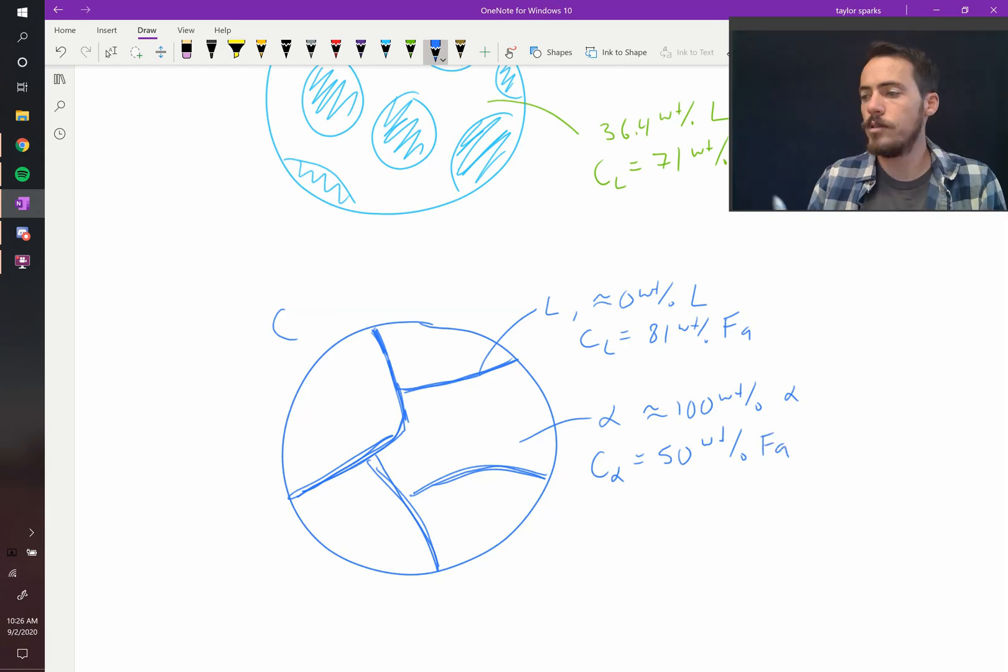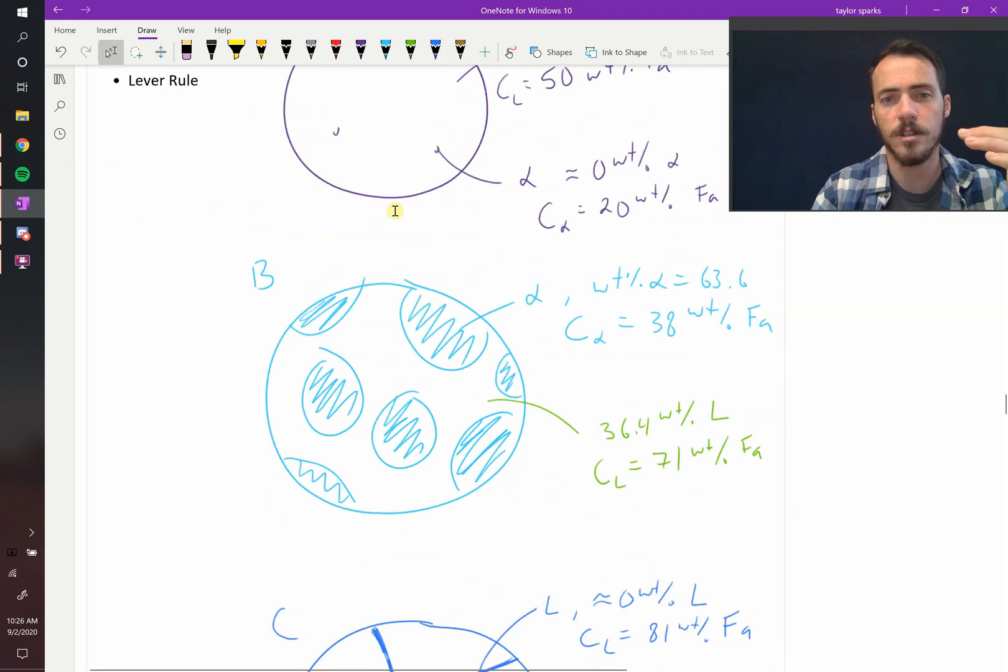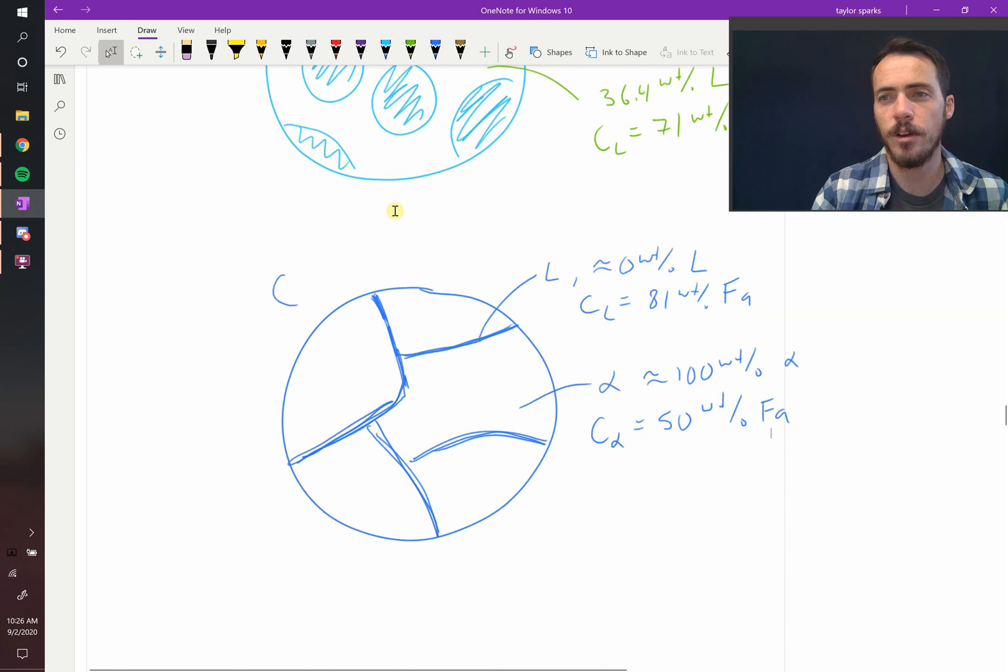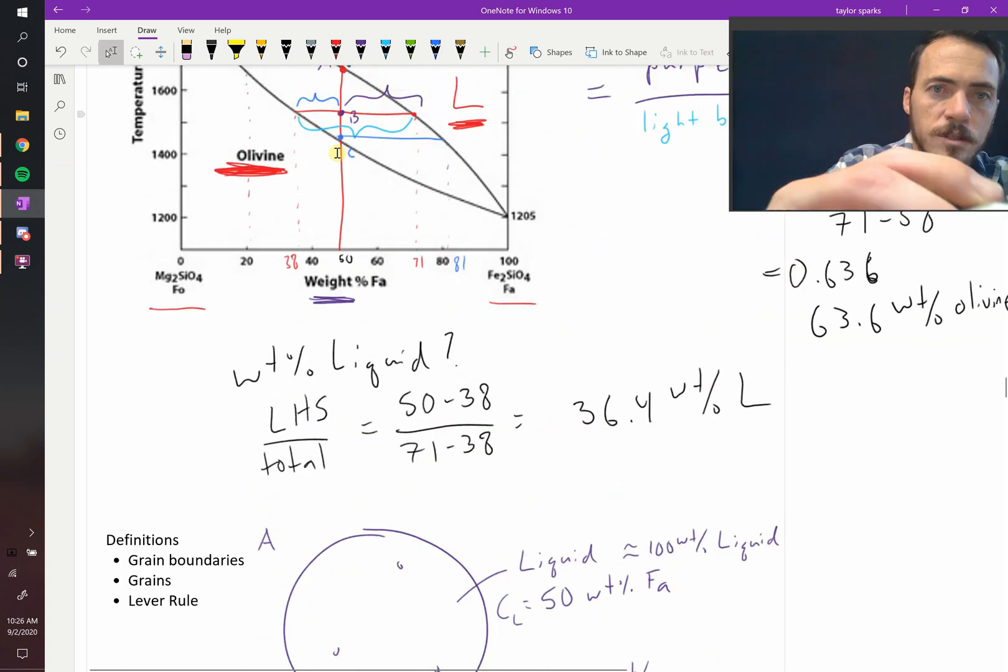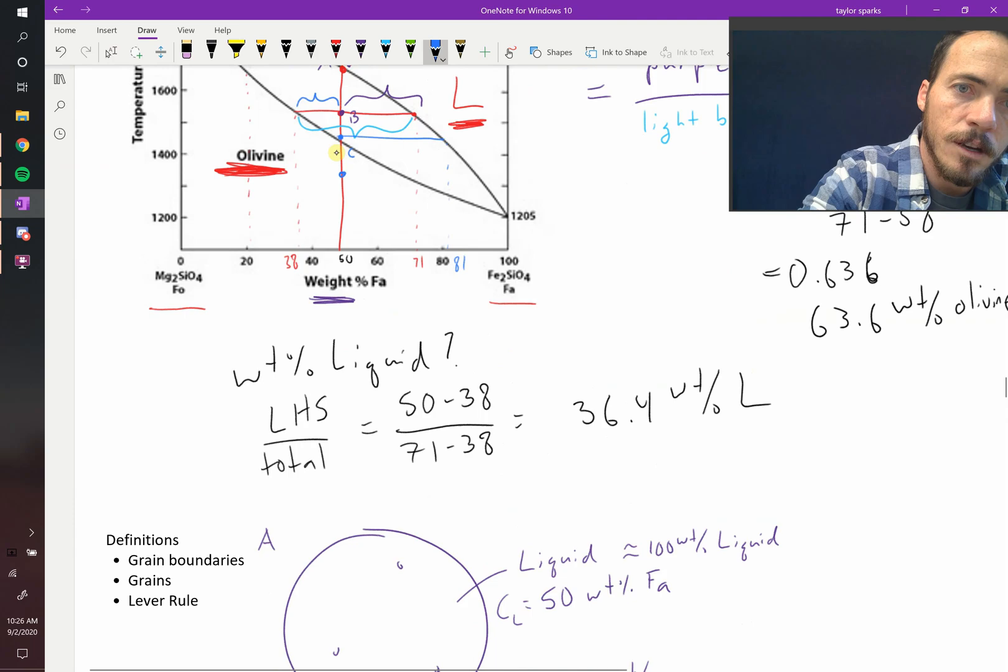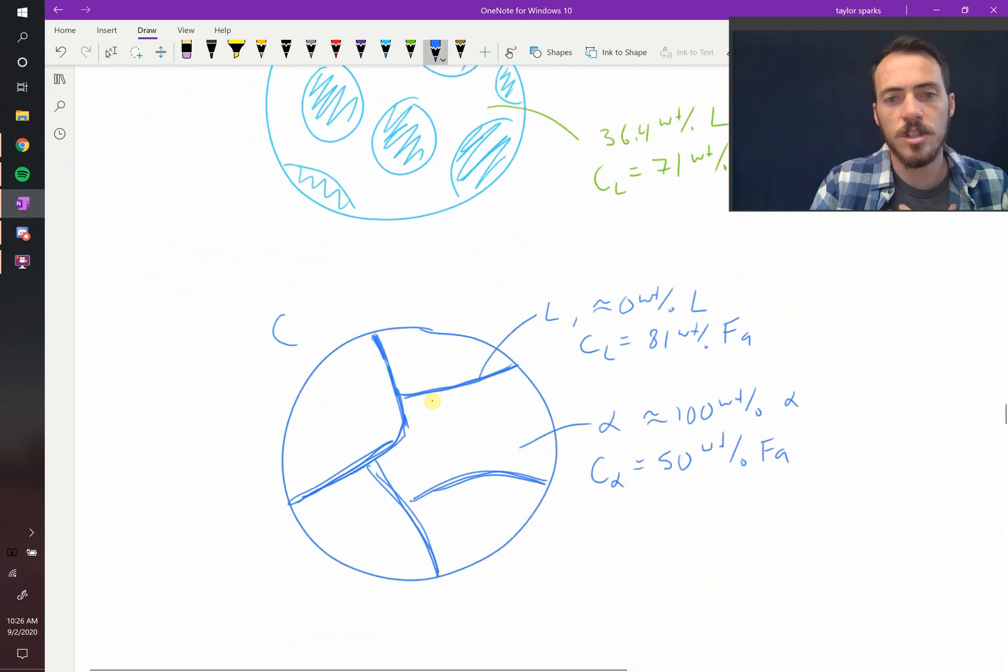So that's why the lever rule is useful is that at any temperature you can figure out the fraction of the phases and the composition of the phases. So you could draw these diagrams of how it's going to solidify. Now this is not a very interesting structure. Once you go a little bit below this point, so if we went from C down here to let's say D, it would look essentially just like this except the liquid would be gone.